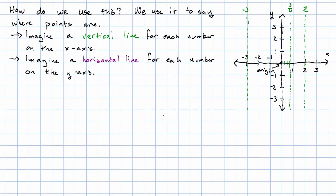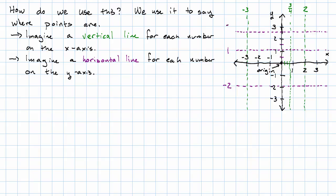We imagine a horizontal line for each number on the y-axis. For example, this horizontal line represents the number negative two, and this horizontal line represents the number positive one. This still counts points not actually marked on the axis — if I take each unit and split it into two equal parts, and count out one, two, three, four, five of them, this horizontal line corresponds to the number five-halves.